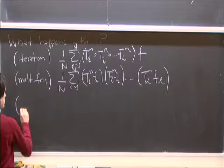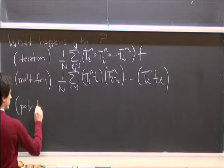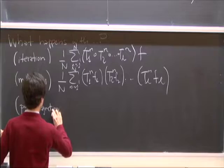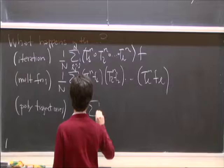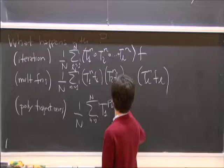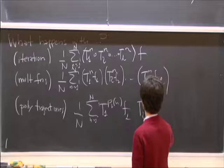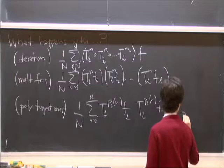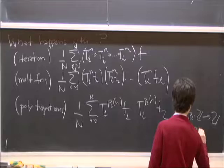You can take multiple functions and ask about the correlation between these different orbits. You can also ask: why should I restrict myself to linear orbits? And instead take polynomial trajectories—something like applying T to P₁(n) and T to P₂(n), where P₁ and P₂ are integer-valued polynomials.